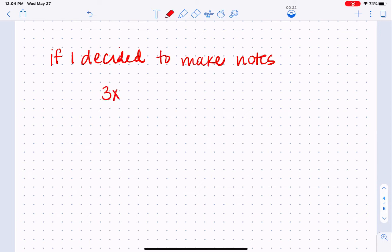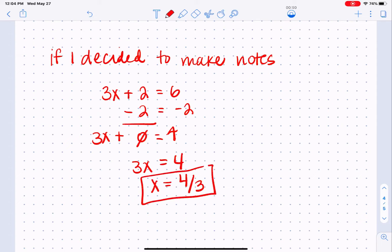Let's say 3x plus 2 equals 6. So to do this first, I'm going to subtract from both sides. And if you're a math teacher and this is not how you do it, humor me because this is how I learned to do it. So then I have 3x equals 4 and then x is going to equal 4 thirds. And there is my answer.